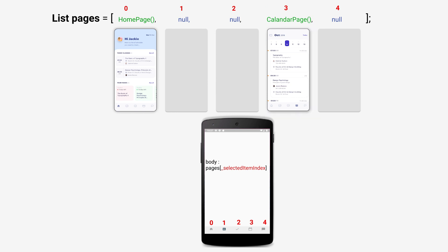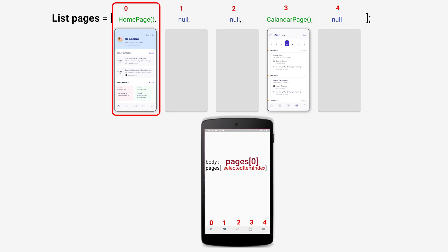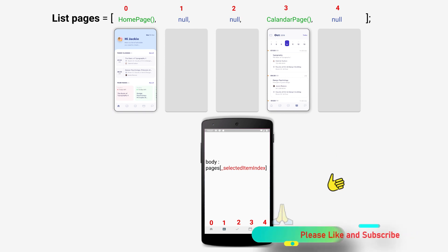The same way, when the user taps on the first item, the selected item index will receive the value 0. Then, on setState, the body property of the scaffold will receive the value of the page at index 0, which is the homepage class. I think you understand the approach now.